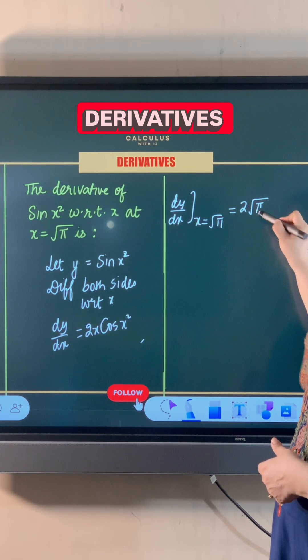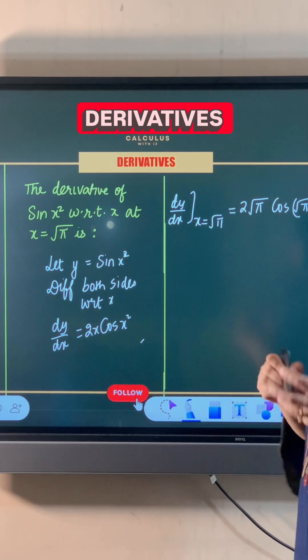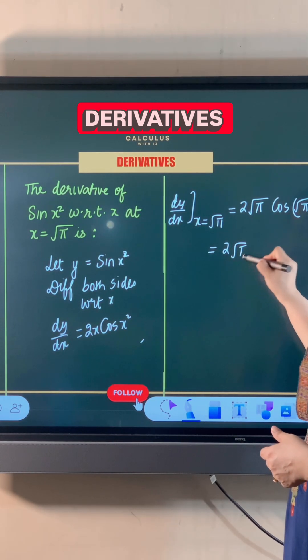So that gives us 2√π cos(√π)². Now what is (√π)²? This is simply π. So this becomes 2√π cos π.